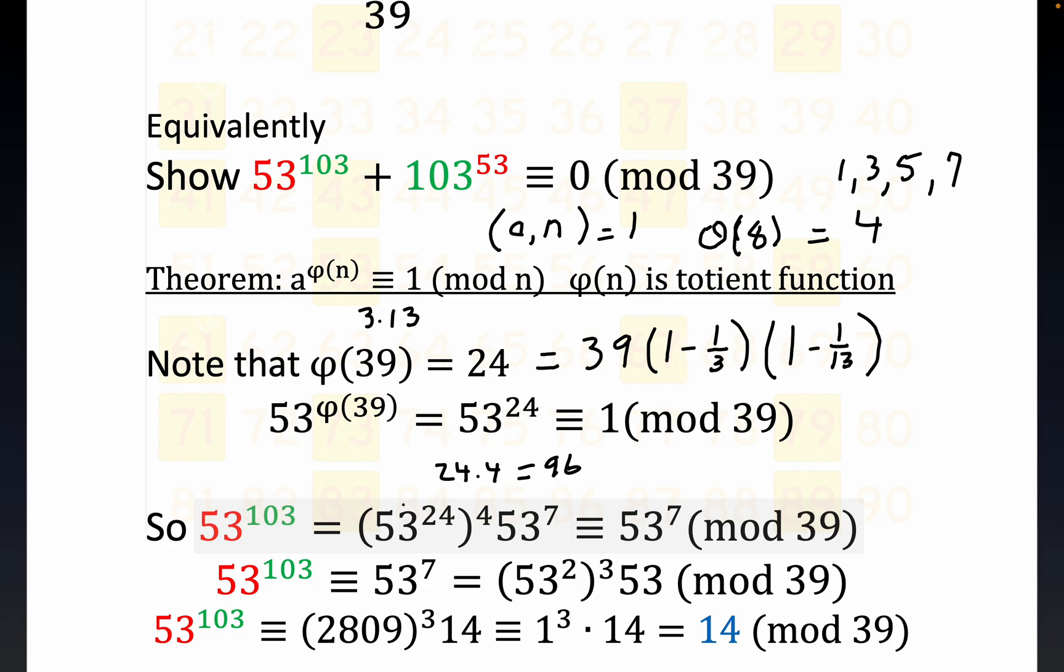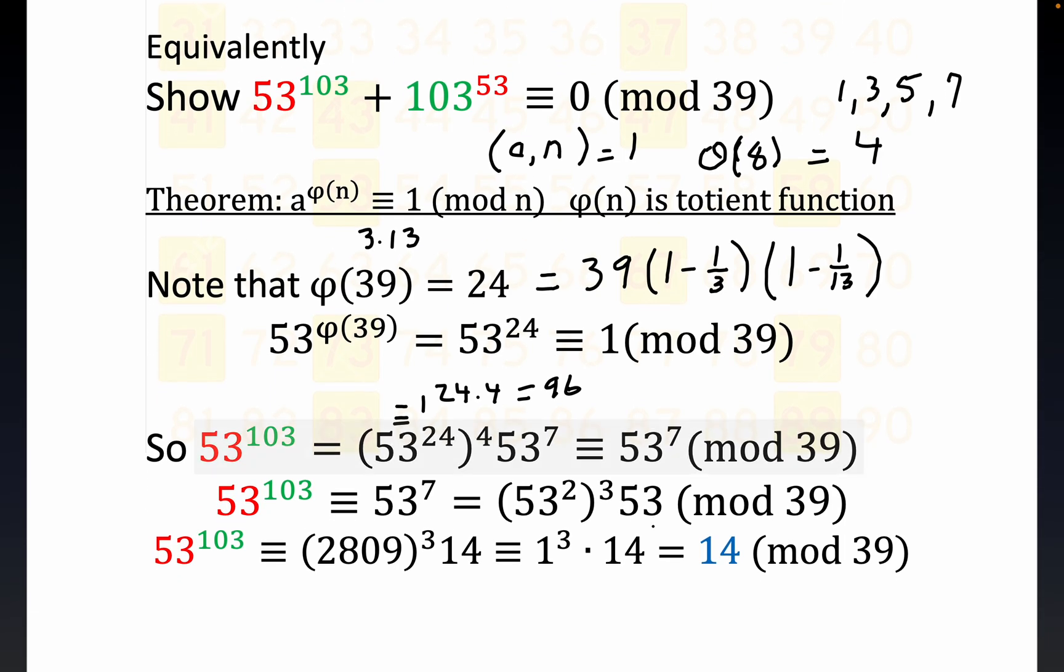So you see, all of this is just congruent to 1. That's what this says right up here. Congruent to 1, and so all that's left is 53 to the 7th. So we have a smaller exponential to reduce. Now, there may be another way to do this, but I just did it like this. I wrote 53 to the 7th is 53 squared cubed times 53 to the 1st power. It's superfluous, but you get 6 plus 1 is 7.